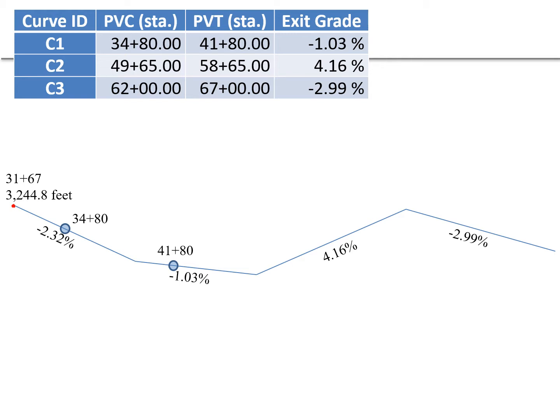The table gave us the remaining exit grades in succession: negative 1.03 percent, positive 4.16 percent, and negative 2.99 percent. Moving into curve C1, the PVC station is 34 plus 80 and the PVT station is 41 plus 80. The exit grade is negative 1.03 percent, and the actual alignment follows the vertical curve between those points. For curve C2, the PVC station is 49 plus 65, the PVT is 58 plus 65, and the exit grade is 4.16 percent.